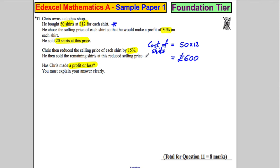So that's his cost. So to check if he's made a profit, he has to make more money than £600 to make a profit.